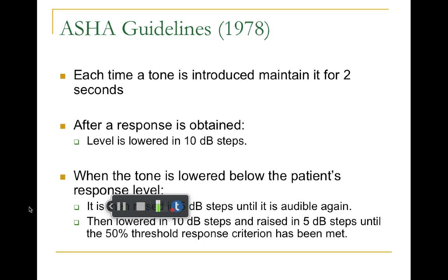For example, let's say the person's threshold is 10 decibels. We start at 30, go down to 20 — response; down to 10 — response; down to 0 — no response. We go up to 5 — no response; up to 10 — response. That's two times at 10. We try again: down to 0, up to 5 — no response; up to 10 — no response; up to 15 — response; down to 5, back up to 10. You bounce around the person's threshold until about 50% of the time you get a positive response. A person's threshold stays pretty consistent, though it may worsen over the years.